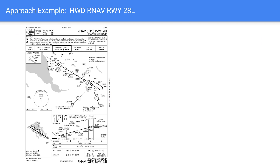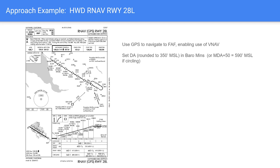The first demonstration is the RNAV runway 28L at Hayward — a GPS approach. We'll use GPS to navigate to and beyond the final approach fix to use VNAV. Assuming a WAAS G1000, we'll set the DA — it's an LPV DA rounded to the nearest 10, so 350 feet — in the Baro-Mins. If circling, we'll set MDA+50, which is 590 feet. Once cleared, set the FAF altitude in alt-select and arm VNAV.